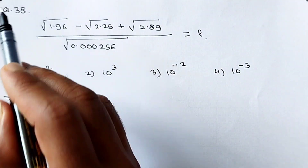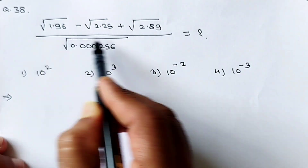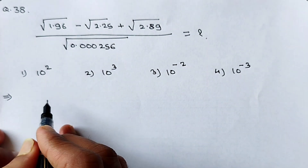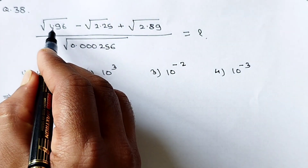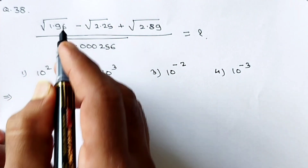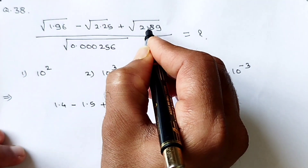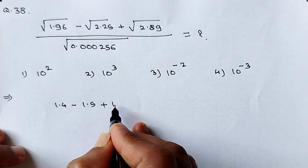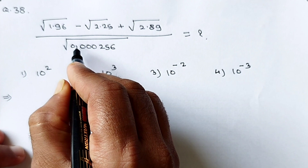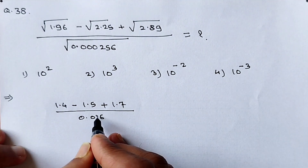See question number 38: (√1.96 − √2.25 + √2.89) divided by √0.000256. These are simple questions checking your presence of mind. √1.96 = 1.4, √2.25 = 1.5, √2.89 = 1.7, and √0.000256 = 0.016. Be careful placing the decimal point.